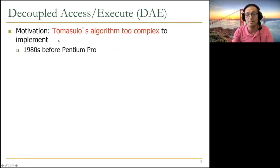Motivation was Tomasulo's algorithm is too complex to implement. Basically, this was 1980s before Pentium Pro. Nobody implemented it. And people suggested that we don't want this much complexity in the systems. Actually, VLIW can be positioned in a similar way also, because VLIW clearly has a very different philosophy than out-of-order execution and Tomasulo's algorithm.